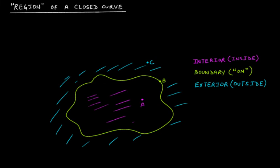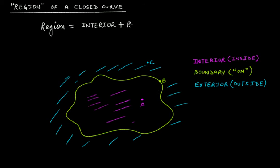Next, let's see what the region of a closed curve is. The region of a closed curve is the interior portion — the interior region or part of this curve — plus the boundary of this closed curve. So boundary plus interior region together make up the region of this curve.